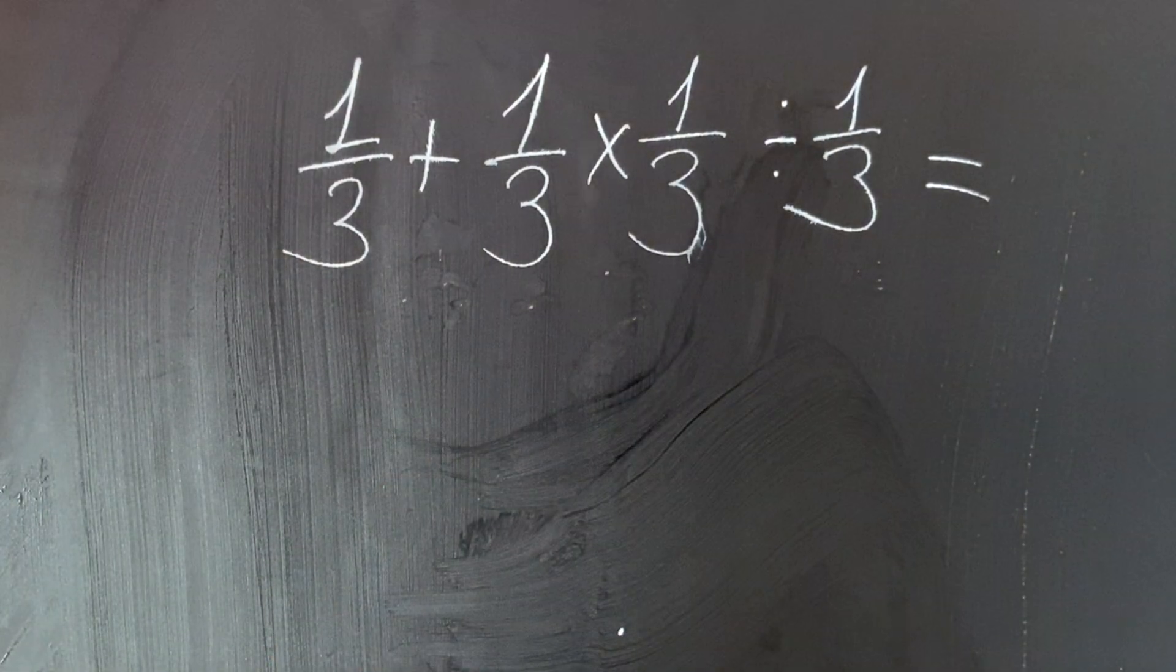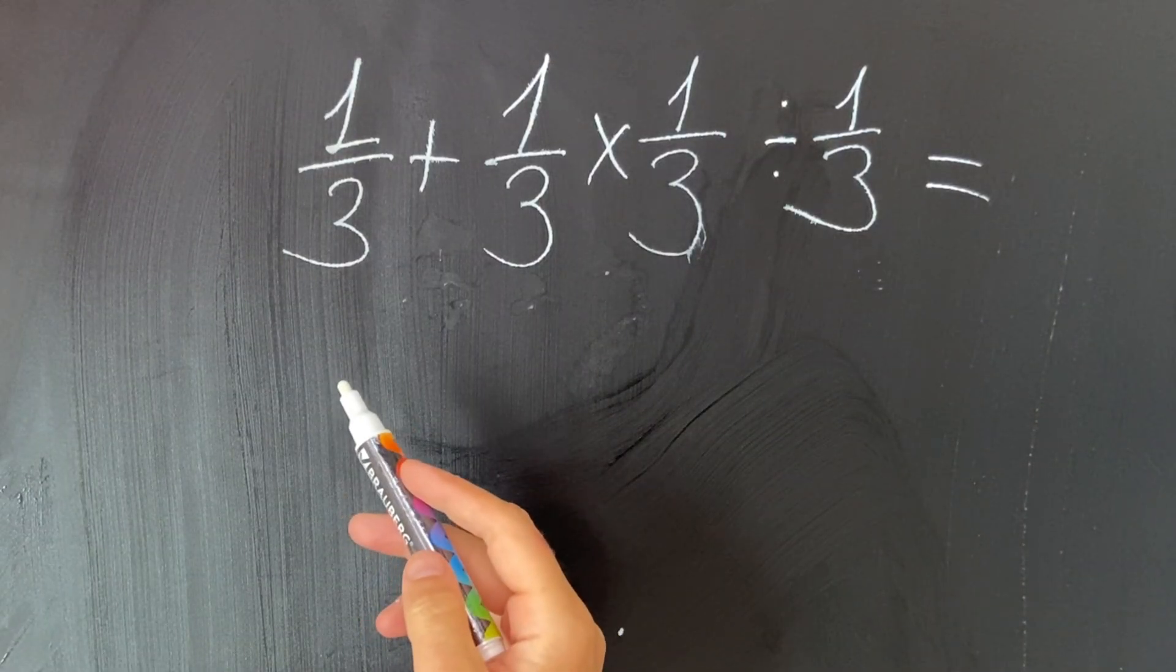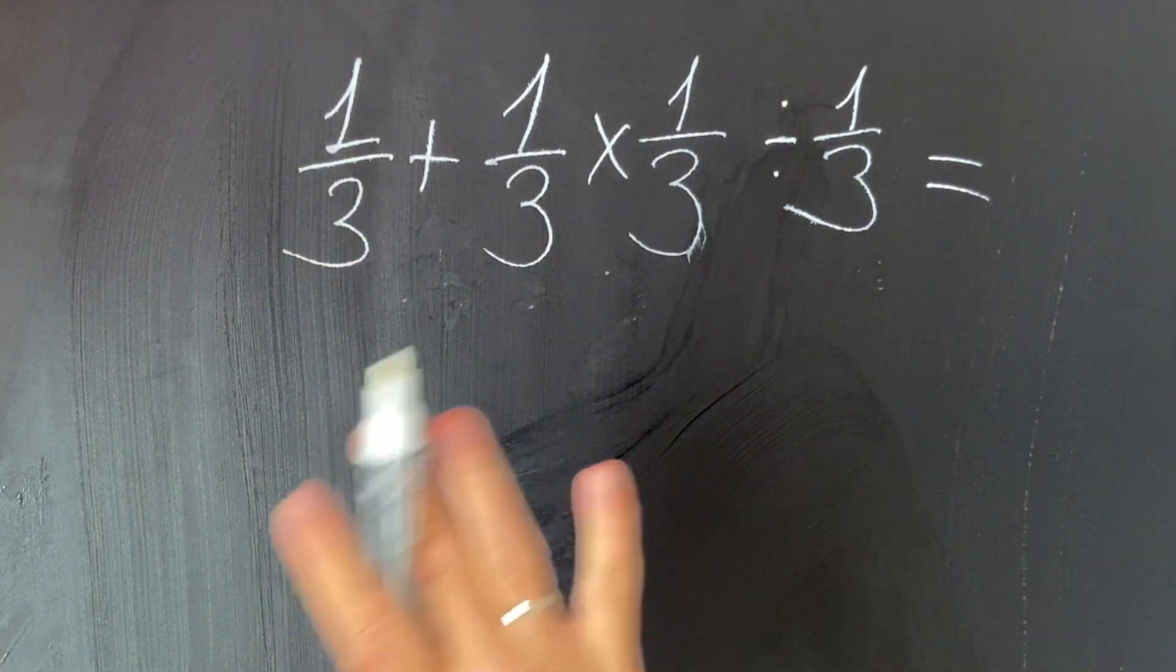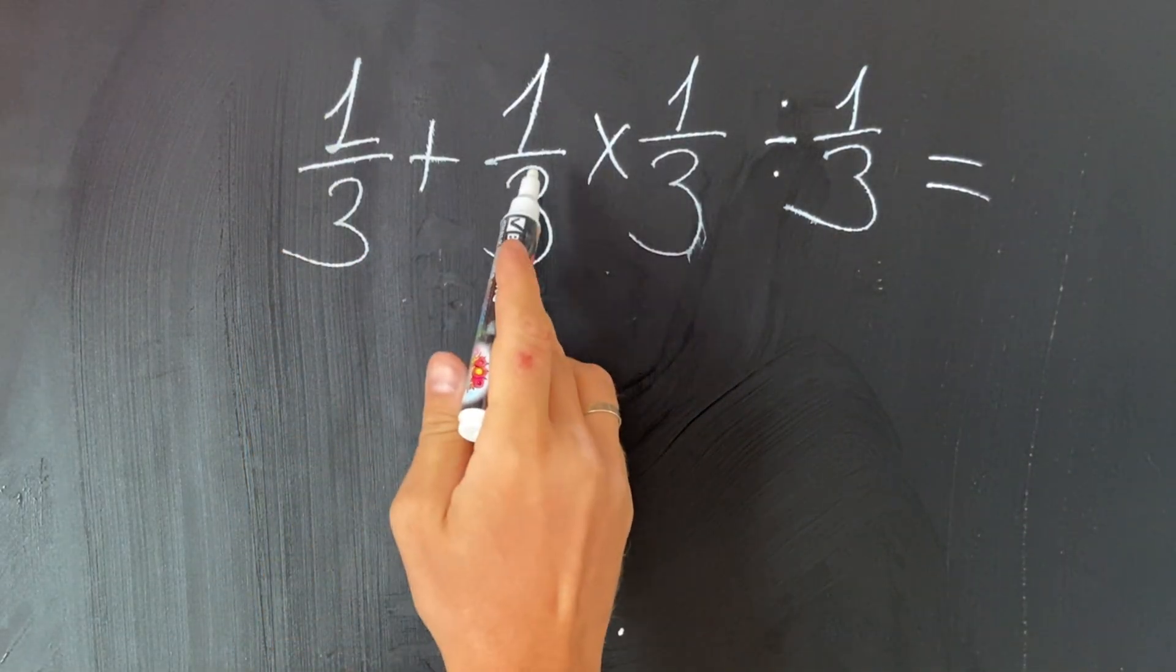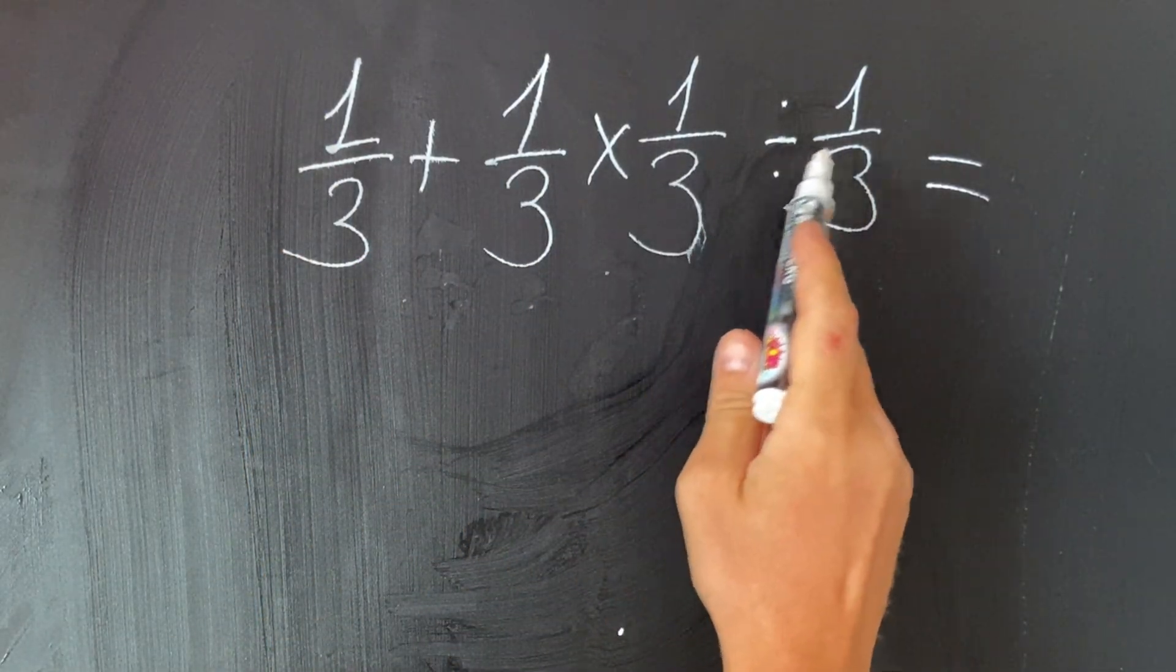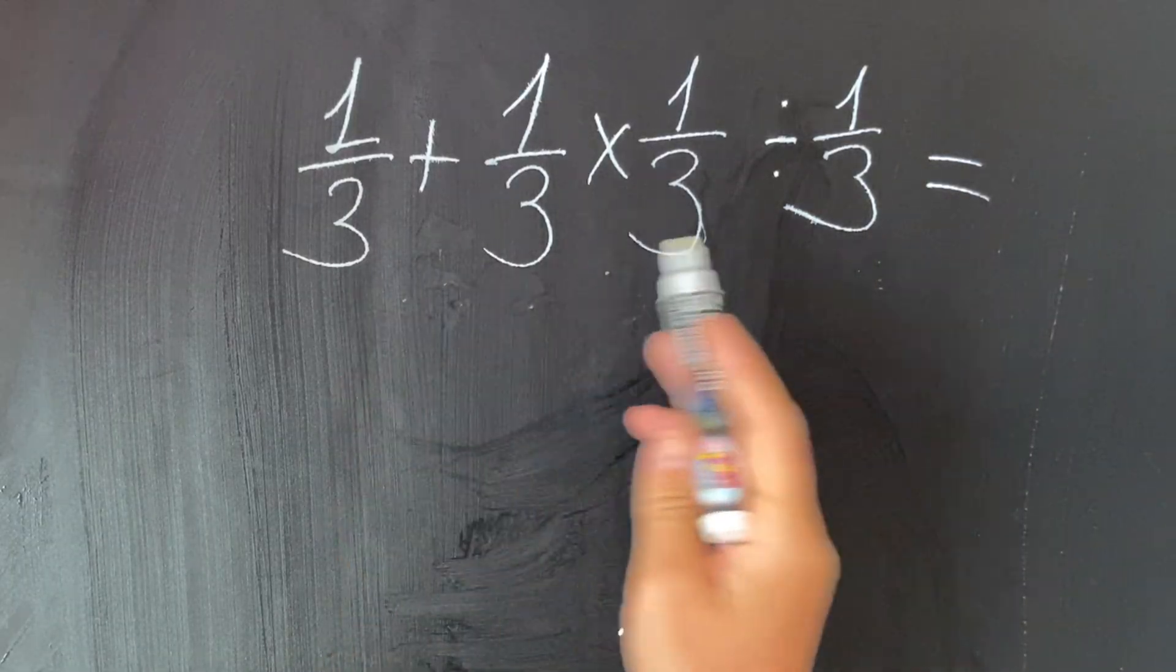Hello everyone, can you solve this equation? One-third plus one-third multiply by one-third divided by one-third. So what many people are doing, they don't follow the order of operation and they start right away with the addition.